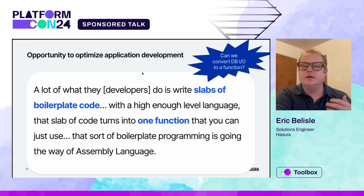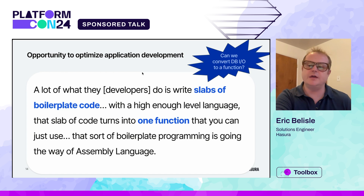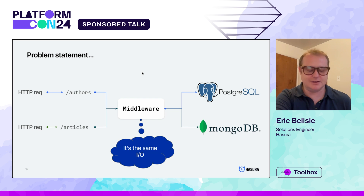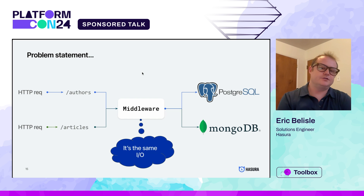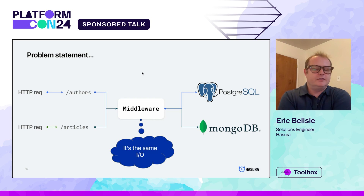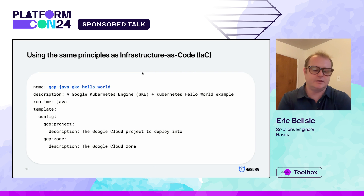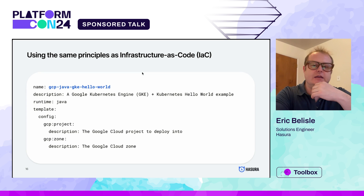So the question is: can we convert database IO to a function? If we could do that, then we can deploy everything through a clean YAML file or JSON file — a la Terraform or something similar. Whether you're making a request for authors or articles inside of your database, they could live in different databases, but the underlying middleware request is basically the same input/output — you're asking for an object and getting an object back. We can think about this as a normal service that you'd be deploying in Kubernetes, for example. Here you can see this is just a YAML file defining a service to be deployed into Google Cloud — we can set a zone and a project on it.